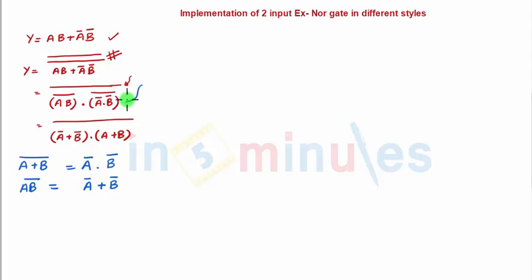I have done the same here and I have just opened the expression, and what I get is nothing but underneath the bar: A bar plus B bar into A plus B. So this is going to be my first term of my pulldown, and this is going to be my second term of my pulldown.